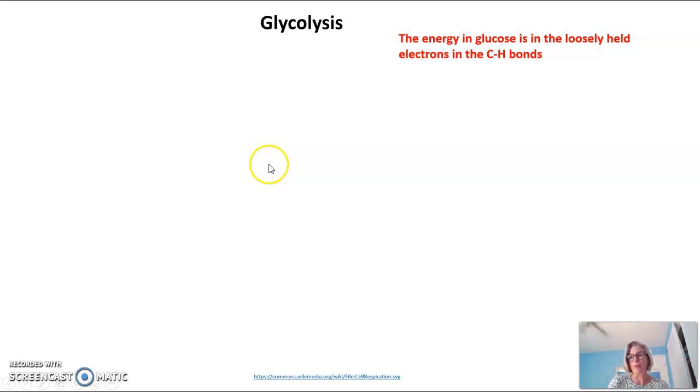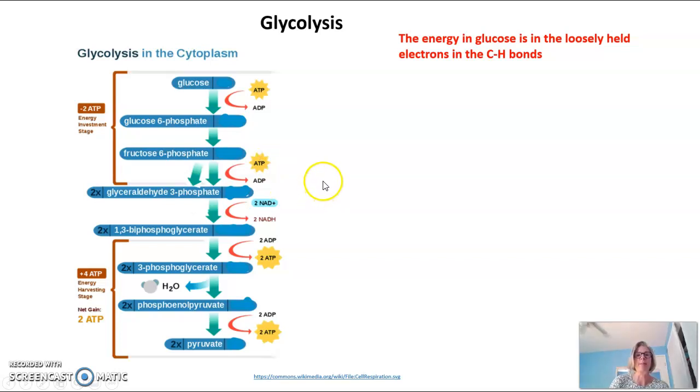So the energy in glucose, as we know from our previous video, is in the loosely held electrons in those carbon-hydrogen bonds. We're going to go through how we get those electrons from those carbon-hydrogen bonds and use those to put the P back on the ADP to make more ATP for the cell in this next series of videos.